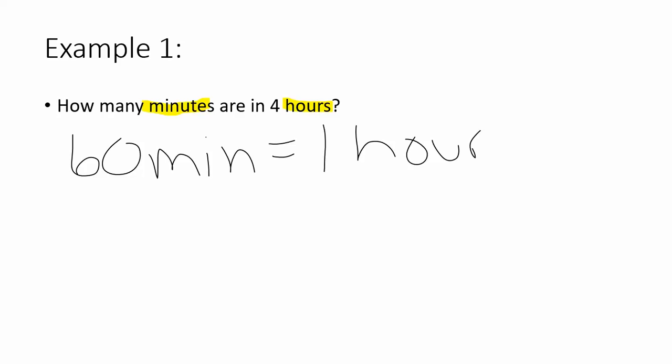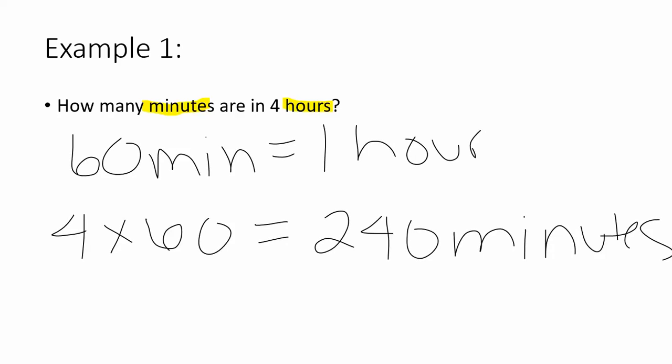60 minutes is one hour, but I want four hours. So I need to take four times 60. So four times 60 gives me 240 minutes. So that means 240 minutes is the same as four hours. And remember, you can use your calculator as you solve these.